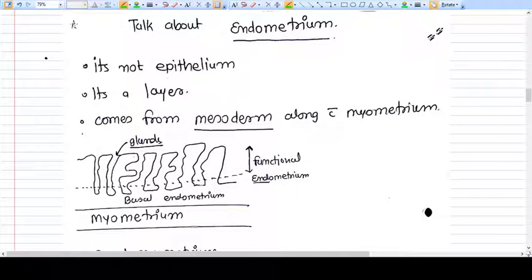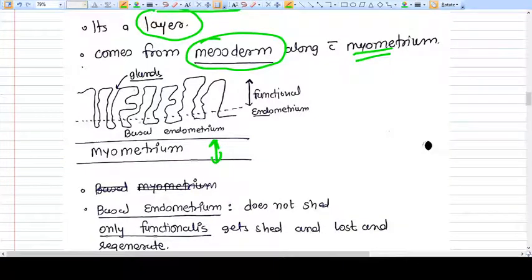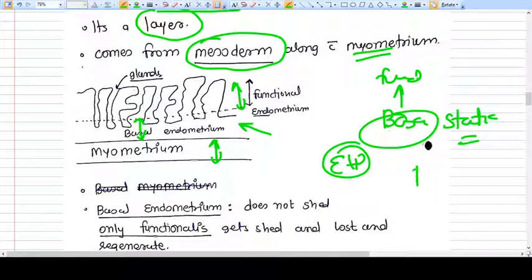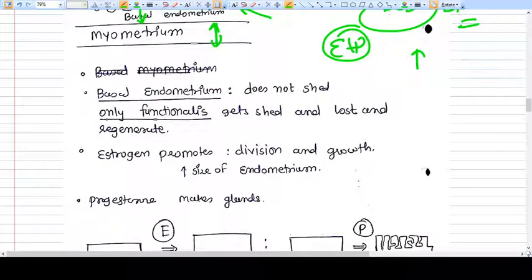The endometrium is not just an epithelium — it is a complete layer that originates from mesoderm, along with the myometrium. This is the myometrium, this is the basal endometrium, and this is the functional endometrium. The endometrium has two basic layers: the basal endometrium, which is static and does not shed or regenerate, and the functional endometrium, which is very responsive to estrogen and progesterone, continually regenerating and shedding according to the menstrual cycle. Only the functional layer gets shed and regenerates.